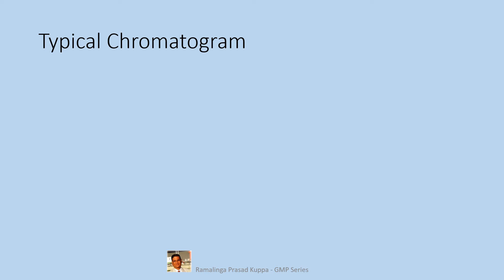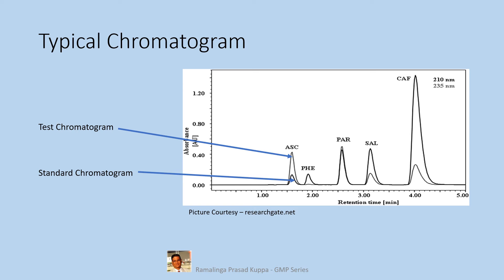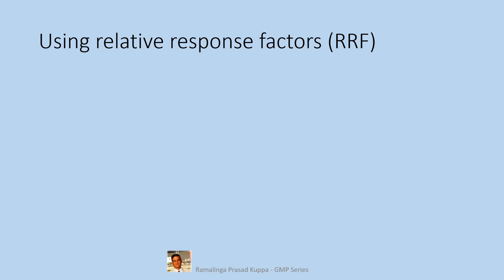See this typical chromatogram. Look at these superimposed chromatograms of standard and test. This is the test chromatogram, and this is the standard chromatogram. This superimposed picture identifies each impurity with the same retention time for test and standard peaks. Each peak is calculated using the area counts of each individual peak using relative response factors (RRF).